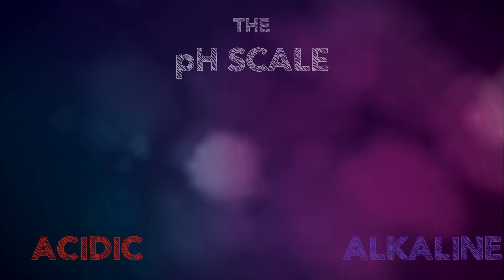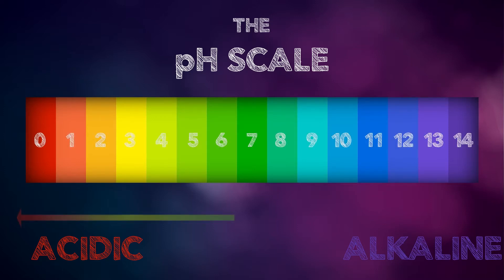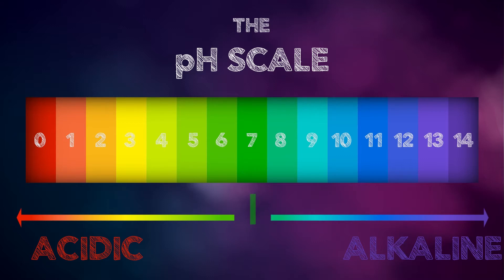But before we do that, let's start thinking about what makes something acidic or alkaline. We use a pH scale to measure this. It ranges from 0 to 14. Acids are defined as pH 0 to 6.9, whilst alkalis are pH 7.1 to 14. Any substance that is pH 7 can be referred to as neutral.